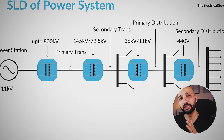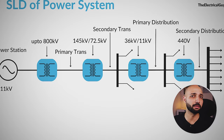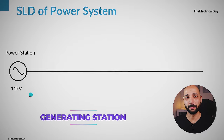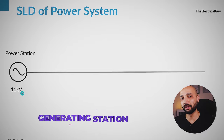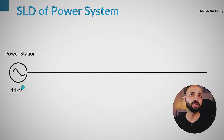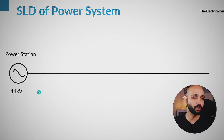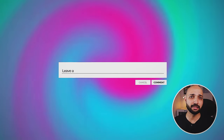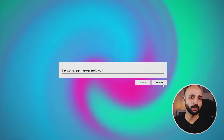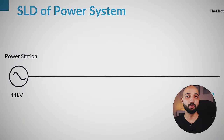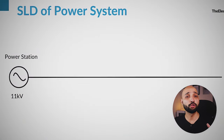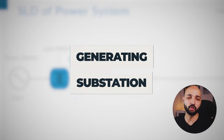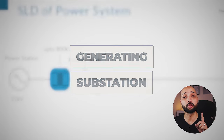The first round symbol that you can see is the generating station — this is where electricity is generated. We generate electricity at a smaller voltage level, around 11kV. If the generating voltage in your area is different, do let us know in the comments.